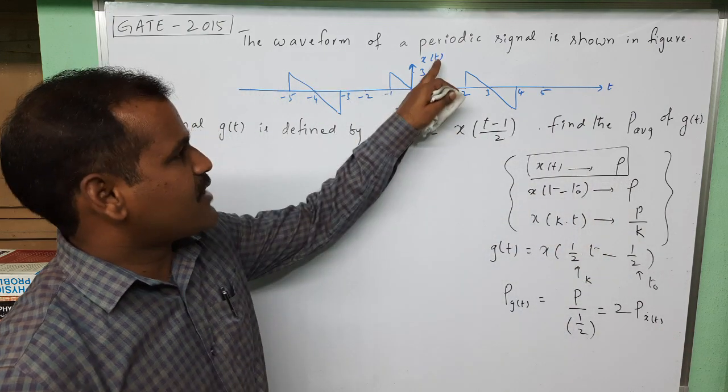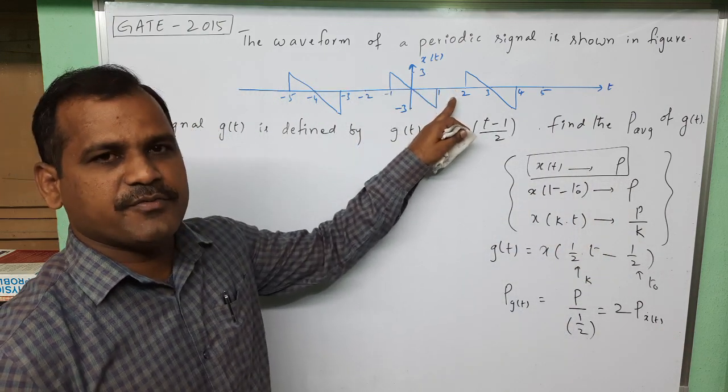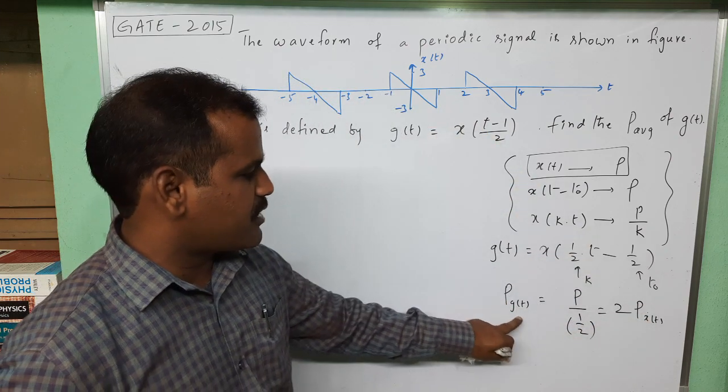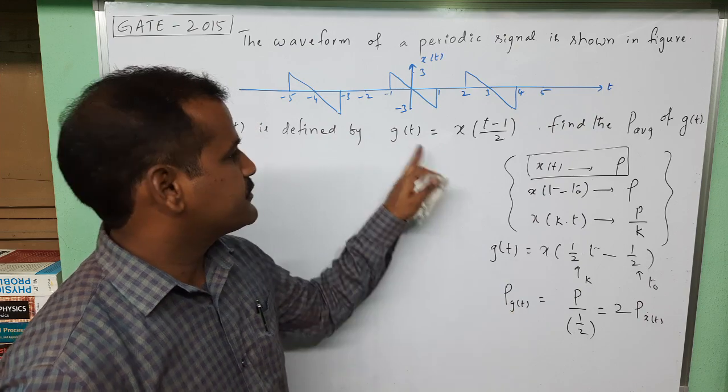So if you find the power of this x(t) as per the given waveform, then double that power is nothing but the required signal power g(t).